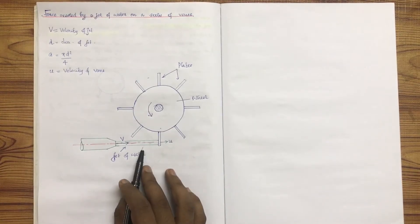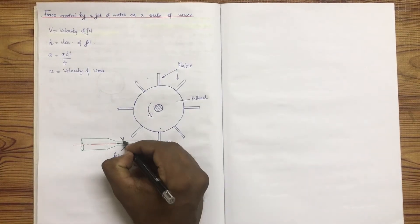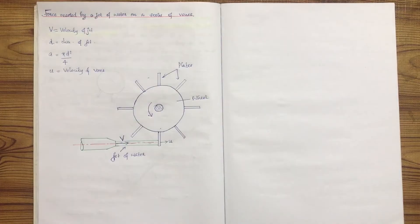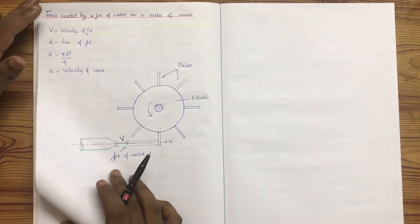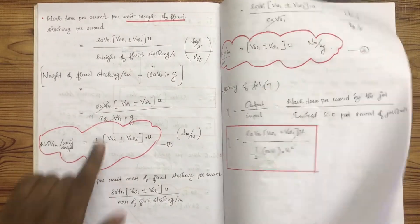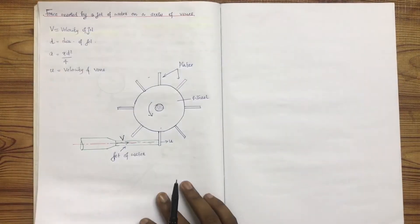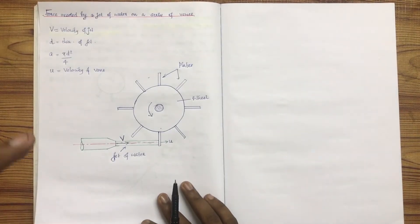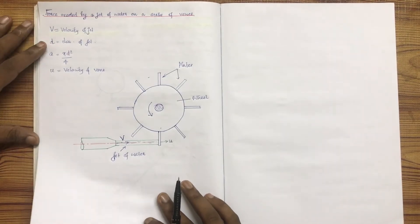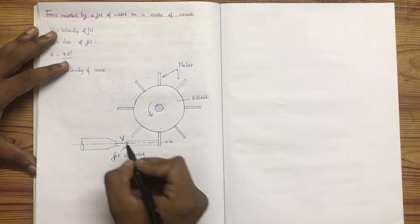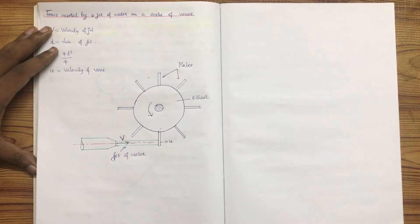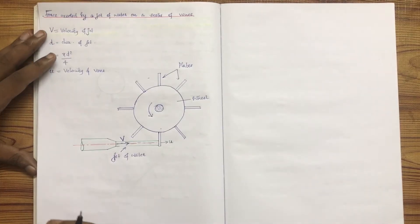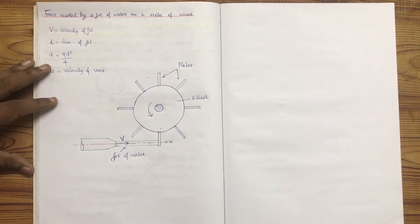This is the mass flow rate. The mass flow rate of the jet is ρAVr — that is, the relative velocity of the water hitting the vane. We take the assumption that, in the case of a series of plates, the mass of water coming out from the nozzle per second is always in contact with the plate.